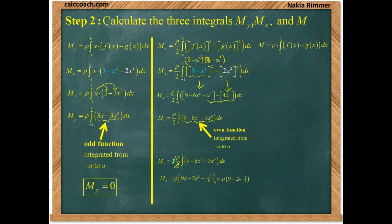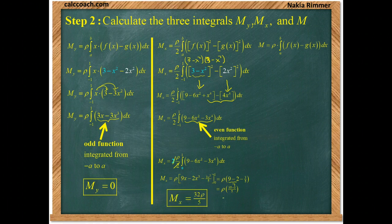We just have to really put the 1 in. 9 minus 2 minus 3 fifths. Or, 7 minus 3 fifths. 7 minus 3 fifths will be 35 over 5 minus 3 over 5. Or, altogether, let's call it 32 over 5. So, 32 rho over 5 is your moment about the x-axis.